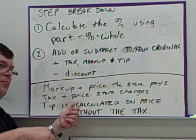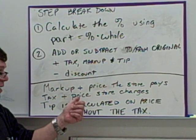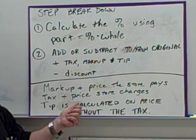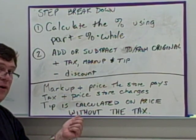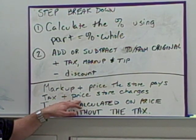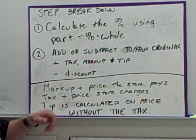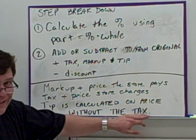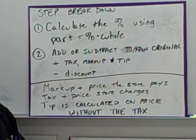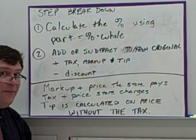Markup plus the price the store pays. When you're doing markup, you're adding that to the price the store itself pays, sometimes they call this the wholesale price. When you're talking tax, you're adding that to the price the store charges, or their bill. Tip is calculated on the price without the tax. When you're asked to calculate a tip, you're calculating the tip based on the price without the tax. A lot of people don't do that when they're calculating their tip, and they end up tipping more than they really need to.